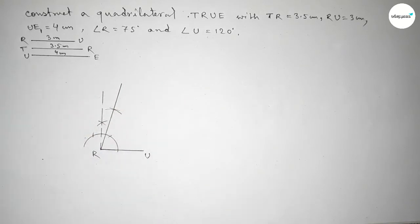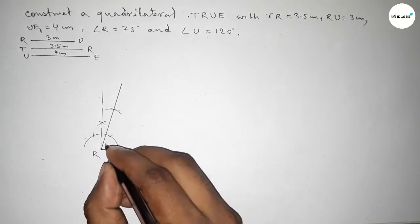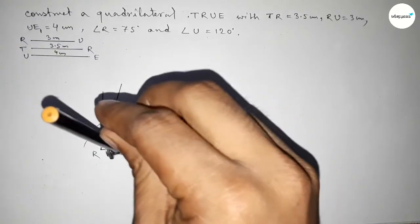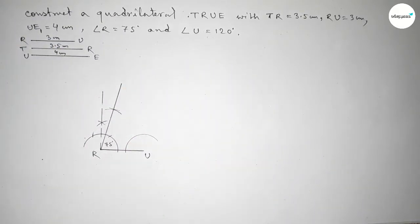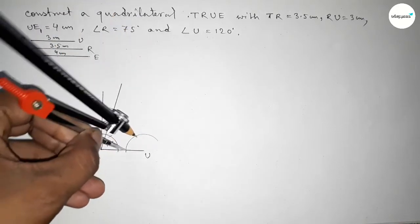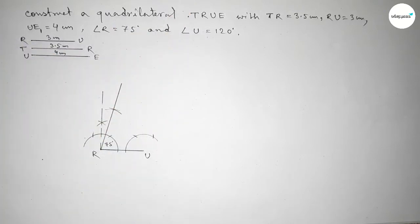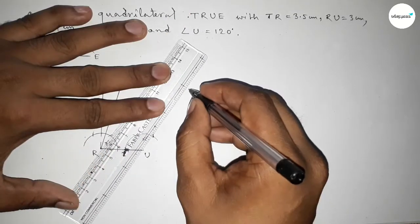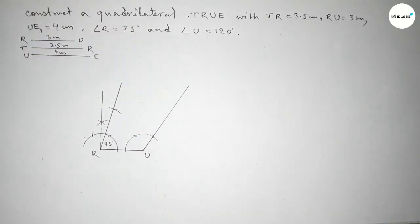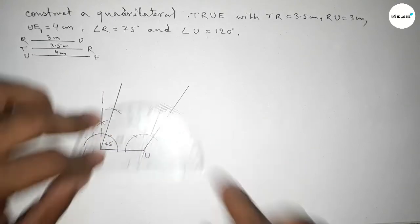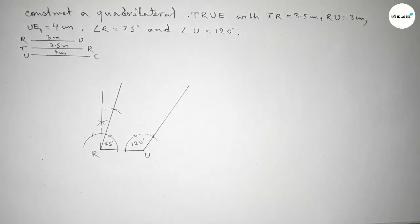Now we have to draw a 120 degree angle at point U. Putting the compass here and taking any length, drawing an arc, then with the same length cutting here and placing the compass here to cut again. Both curves intersect at a point — joining this line gives a 120 degree angle. Checking this: it is 120 degrees perfectly.